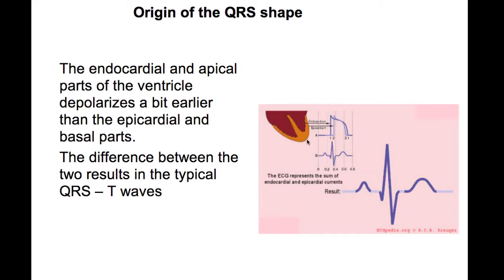Especially between the apex of the heart and the basal parts of the heart. This results in a small time difference in the onset of activation of cardiac ventricle muscle, and differences in the onset result in a QRS shape on the surface ECG.